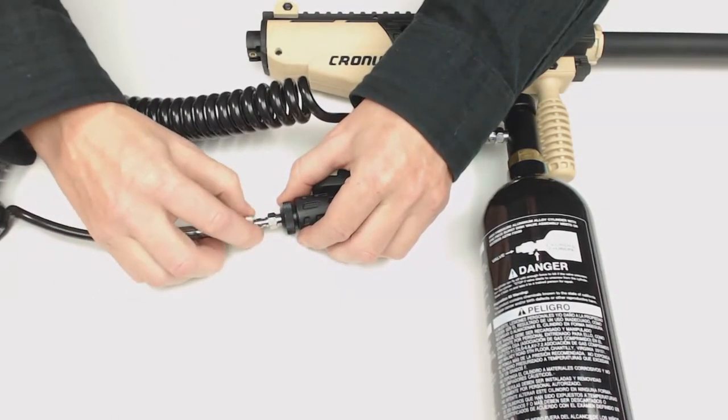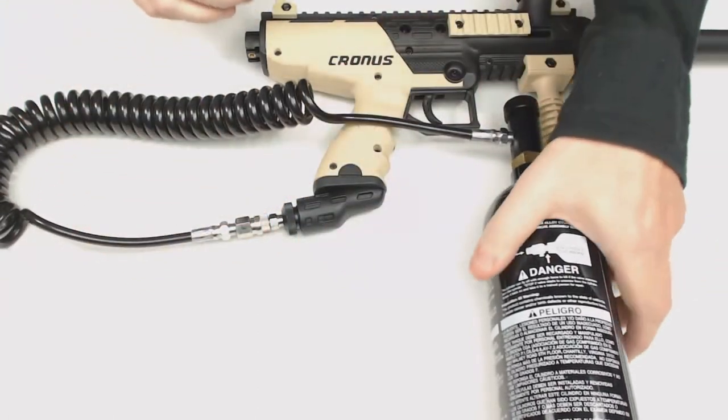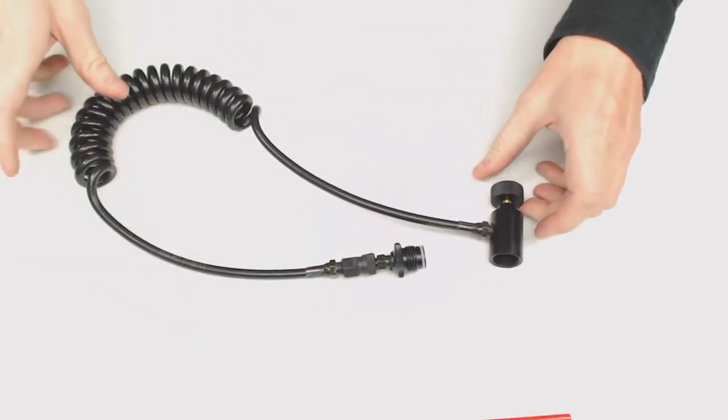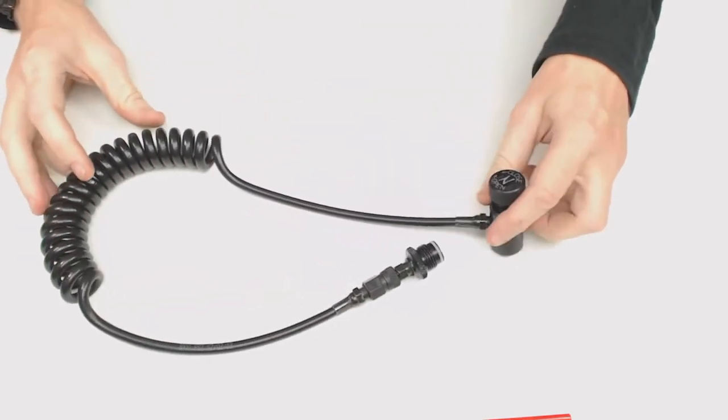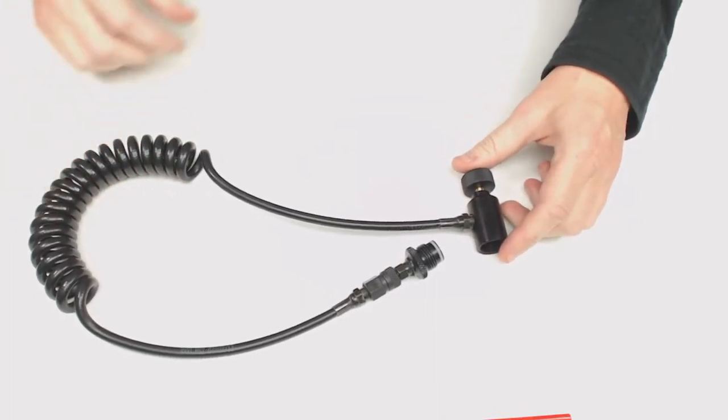These will all have some sort of disconnect that allows you to separate the bottle from your gun. This is the most basic one. Let me show you some of the different types of remotes. First, here's the most basic type of remote line. This one happens to be a Ninja.